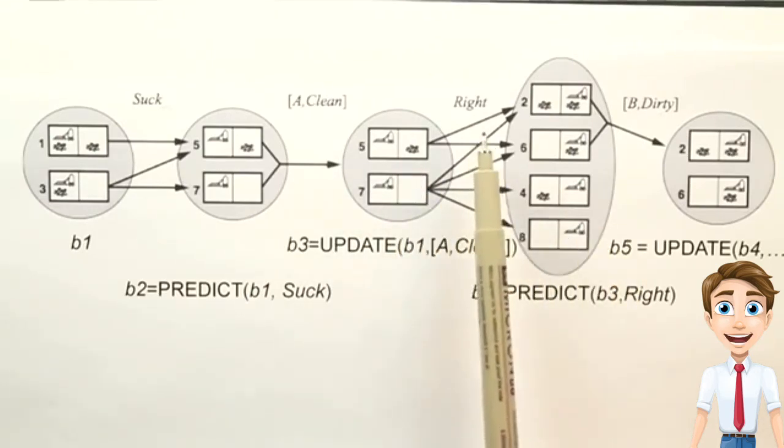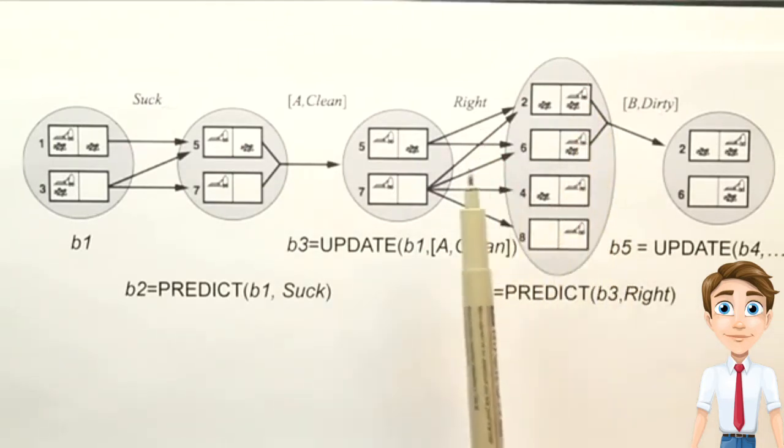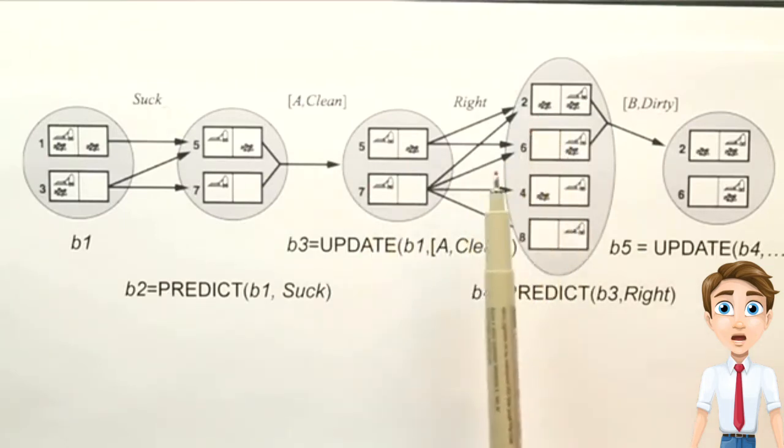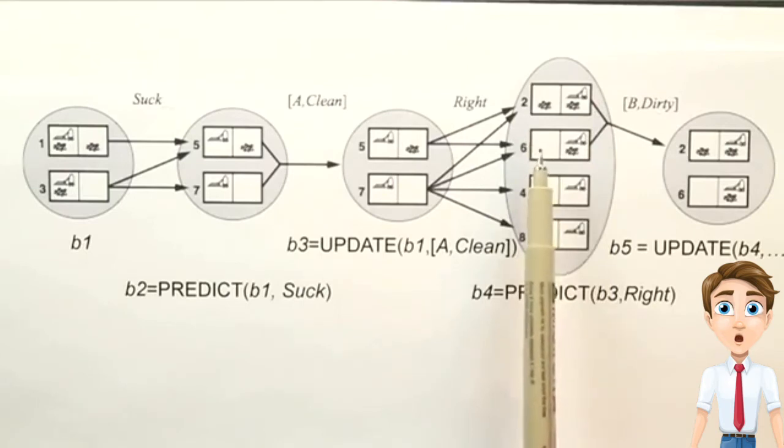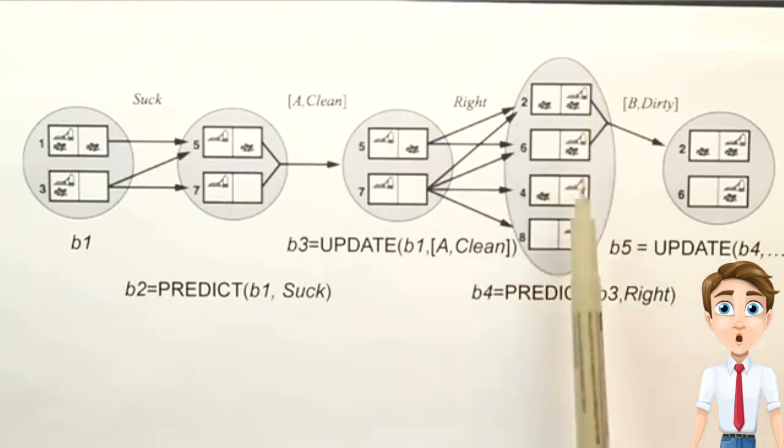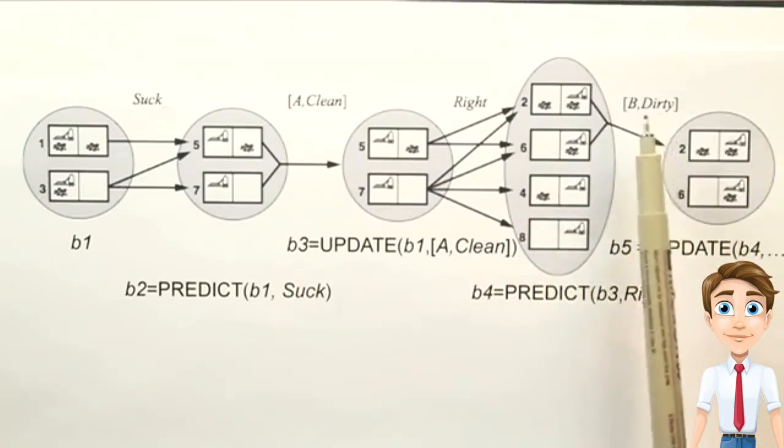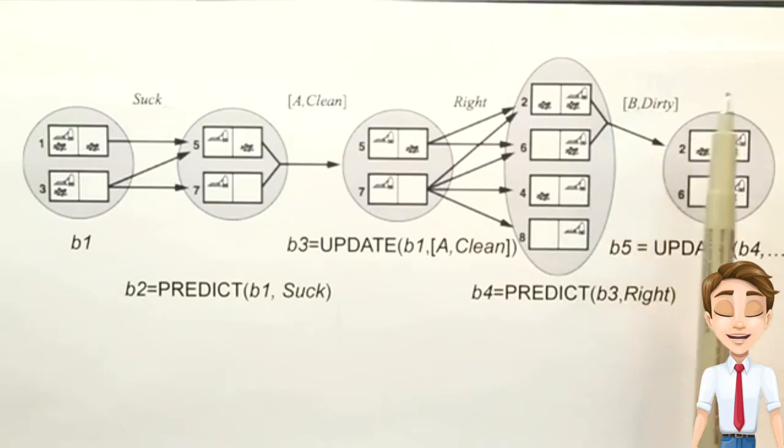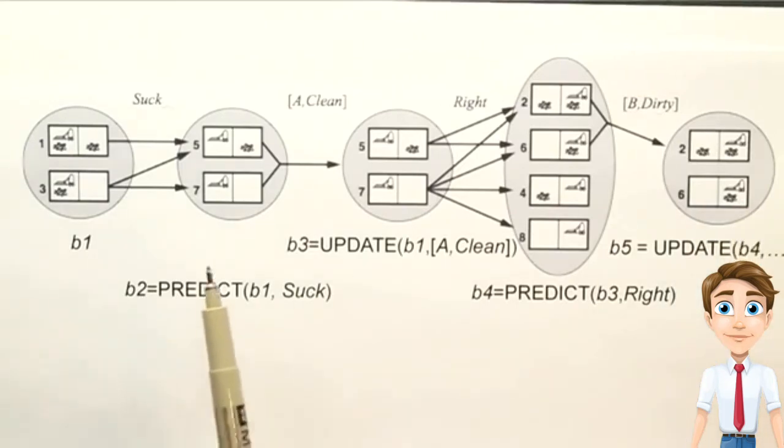And then if we execute the right action, well, then lots of things could happen, because we move right, and somebody might have dropped dirt in the right location, and somebody might have dropped dirt in the left location, or maybe not. So we end up with four possibilities, and then we can update again when we get the next observation. Say, if we observed that we're in B and it's dirty, then we end up in this belief state. And we can keep on going, specifying new belief states as a result of successive predicts and updates.